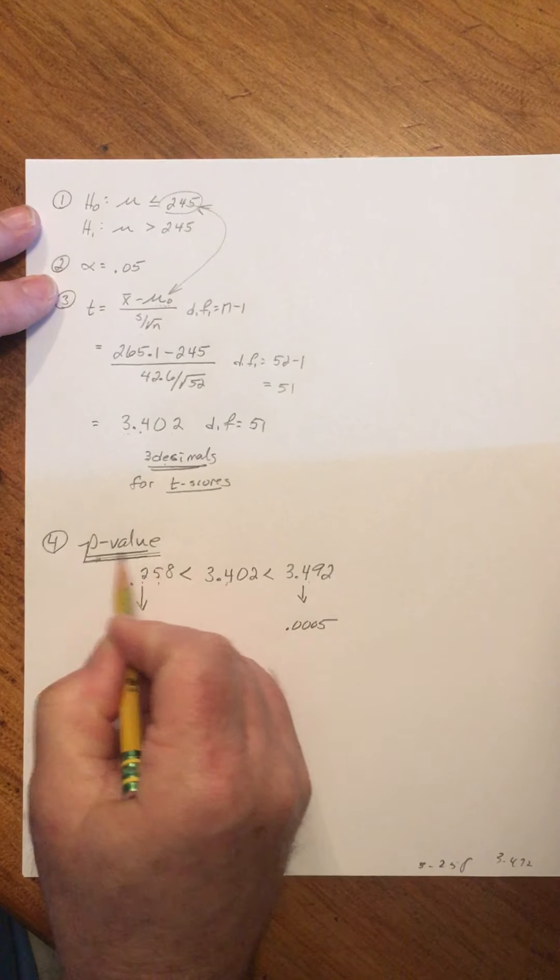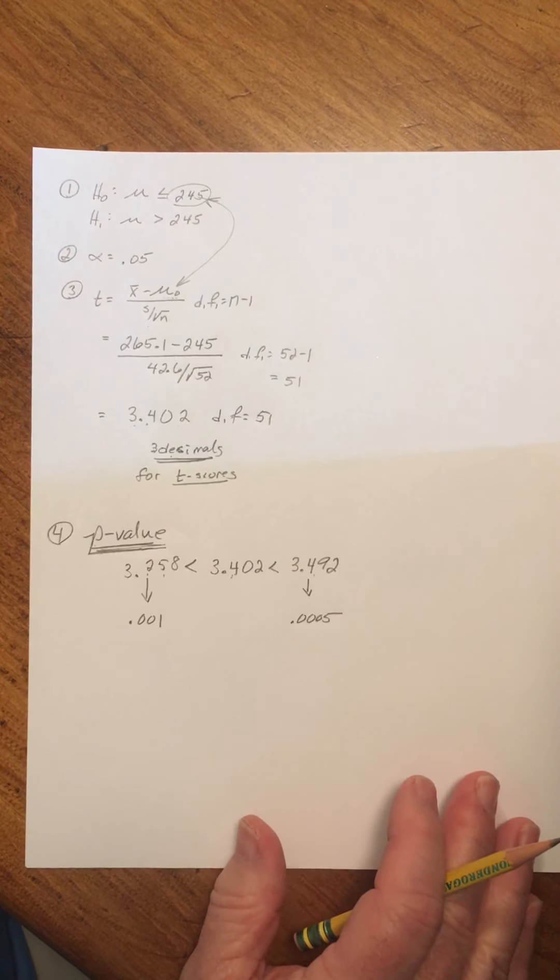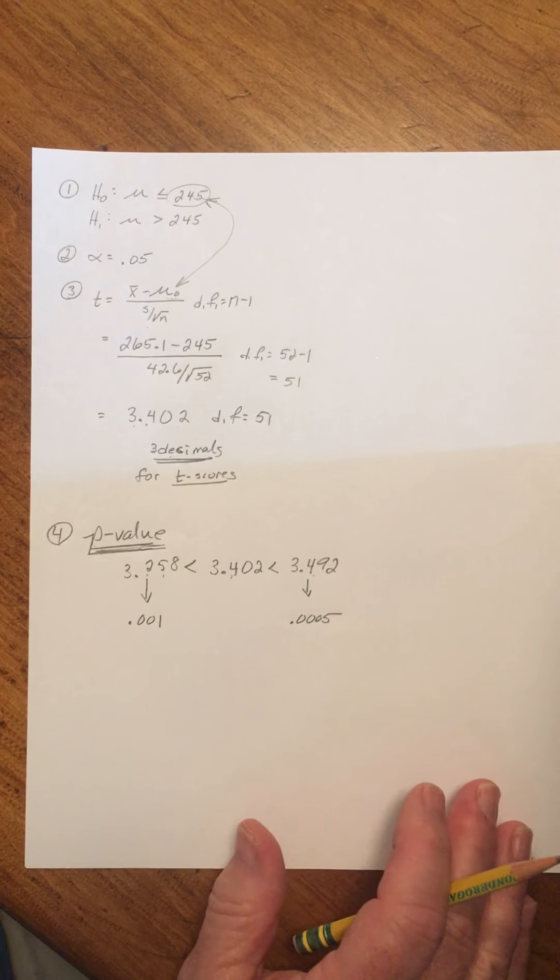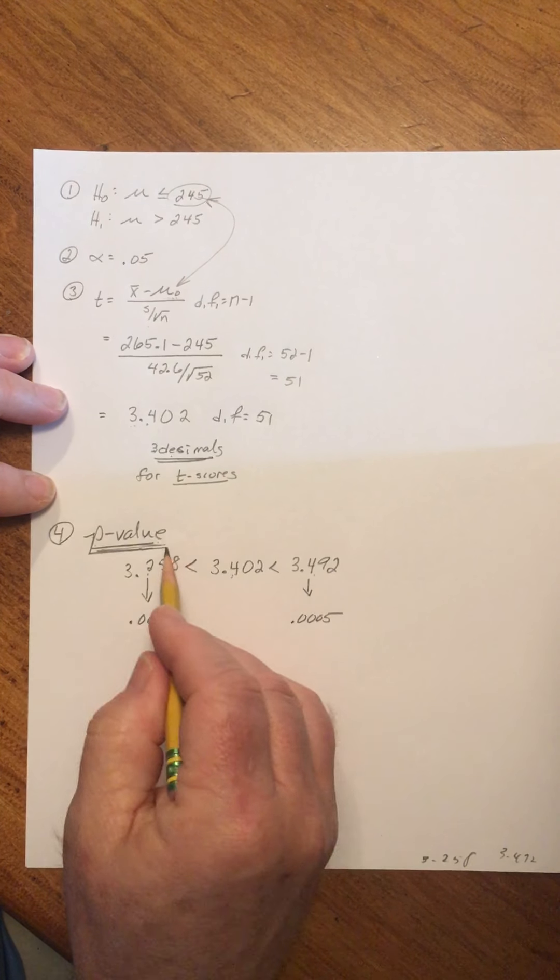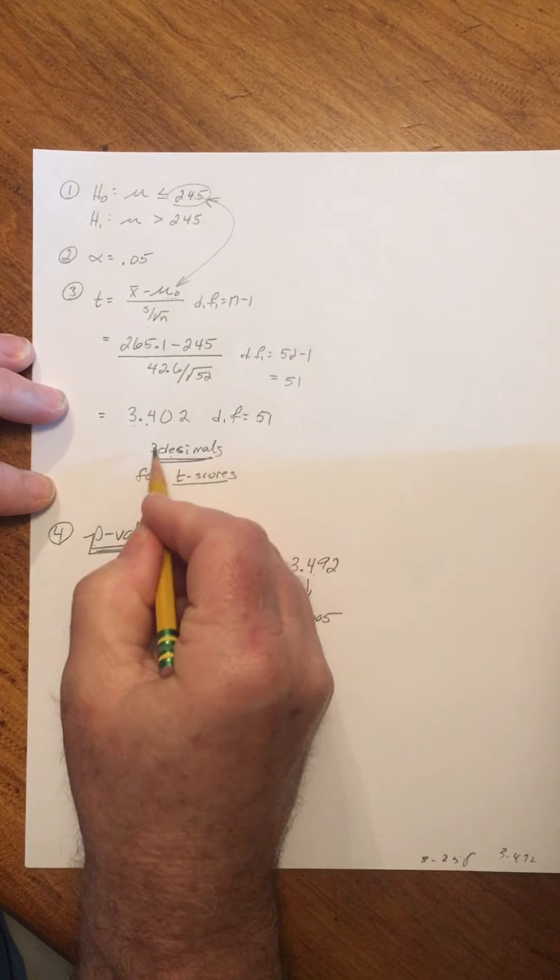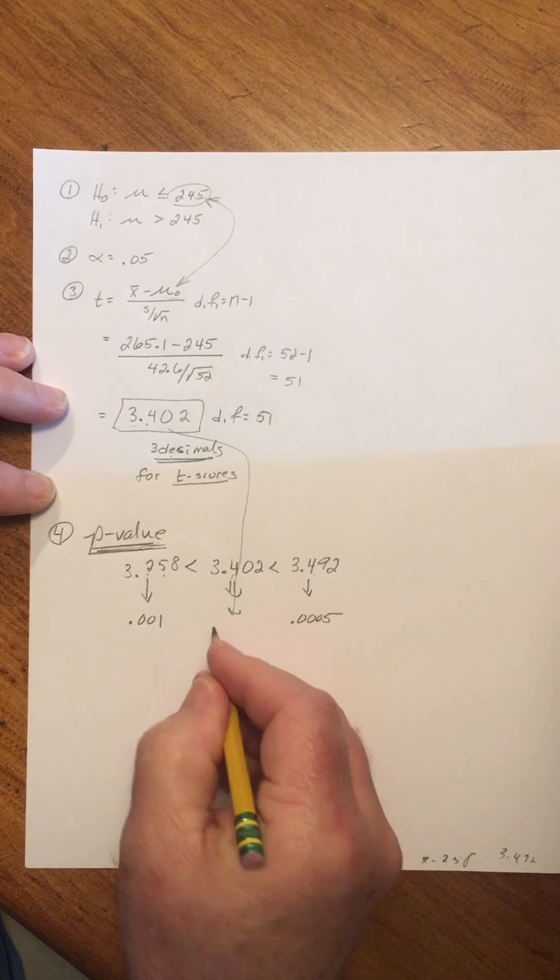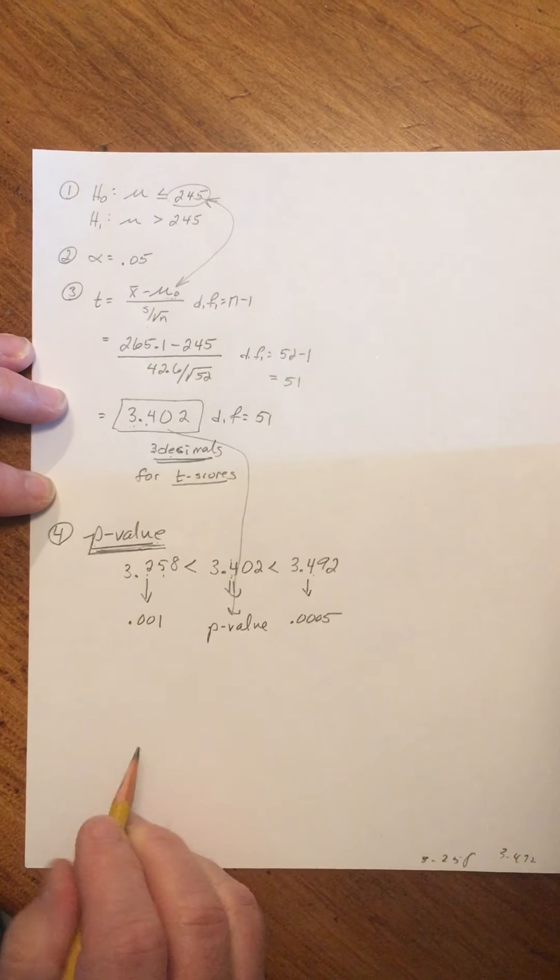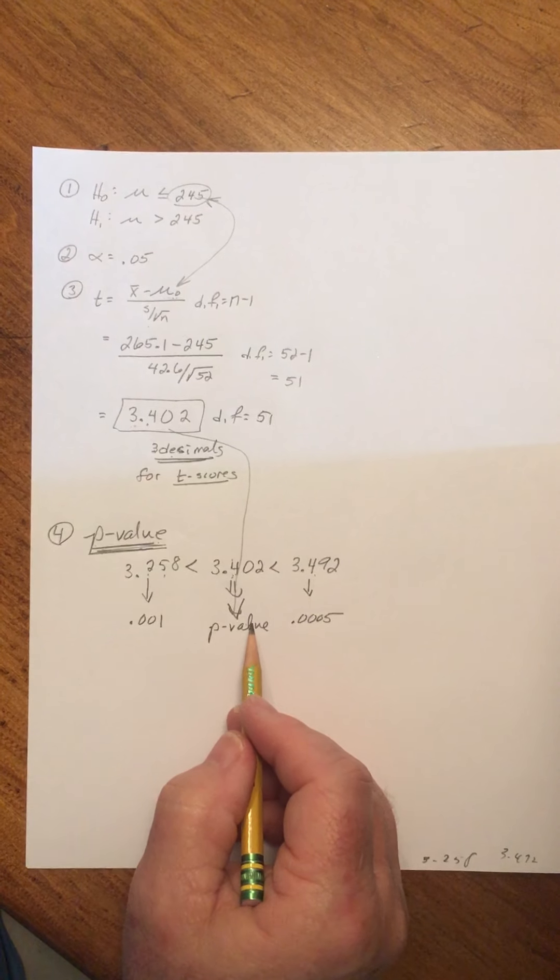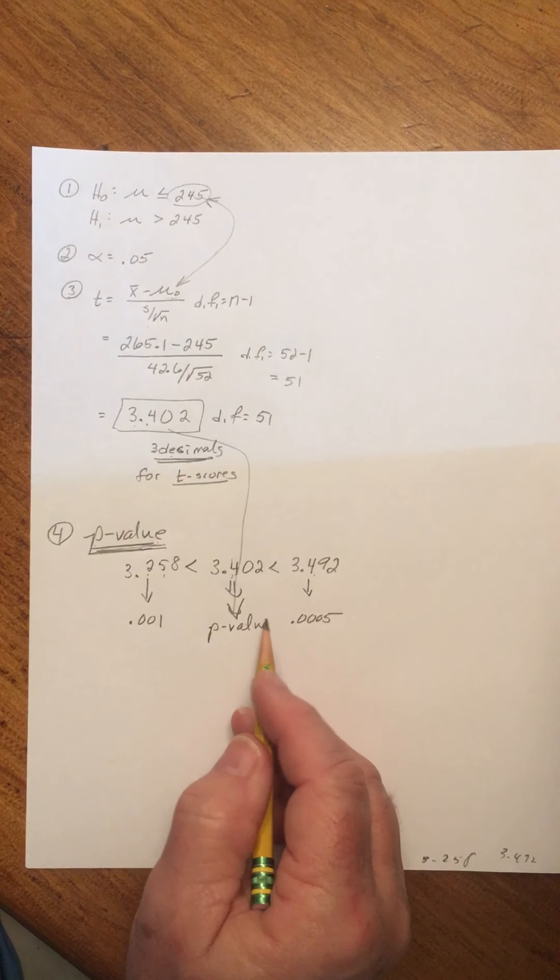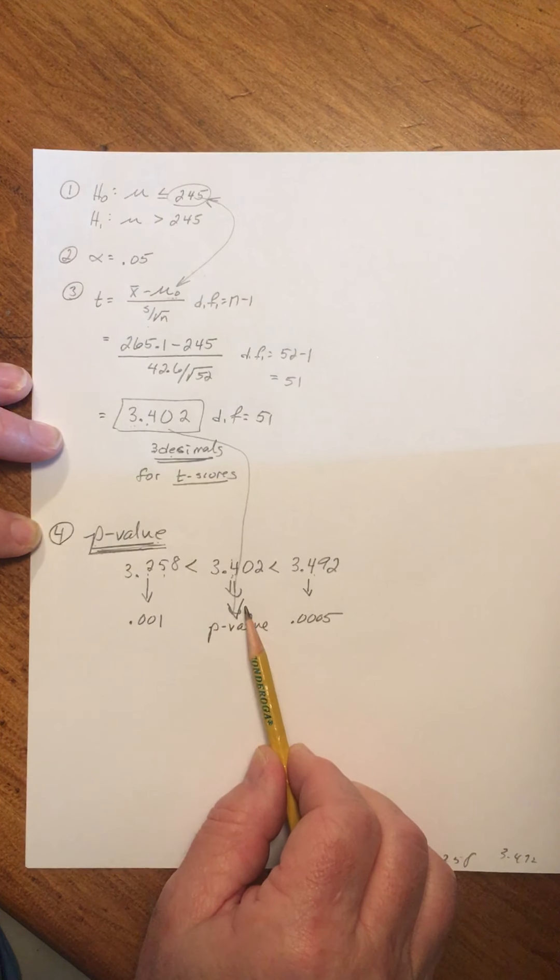The p-value we're looking for, because of the structure of the t-table and really as much as anything because of the requirement of degrees of freedom, we cannot find the number we're looking for precisely. The number we computed is going to give rise to the p-value that we want.